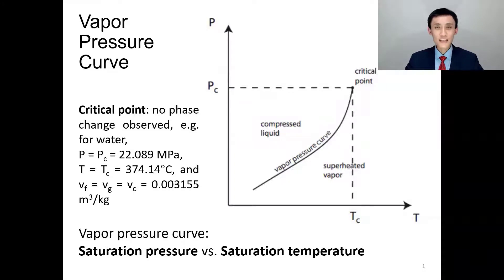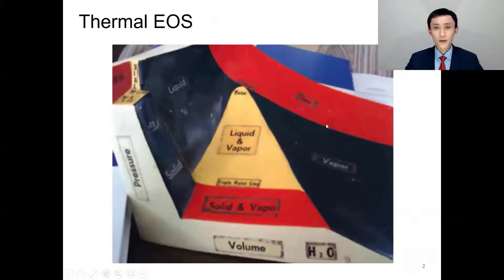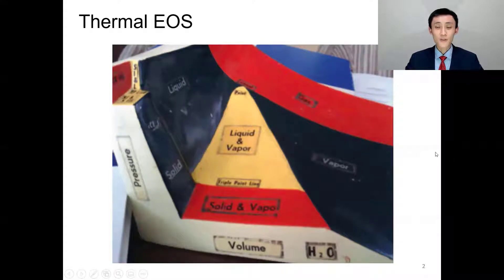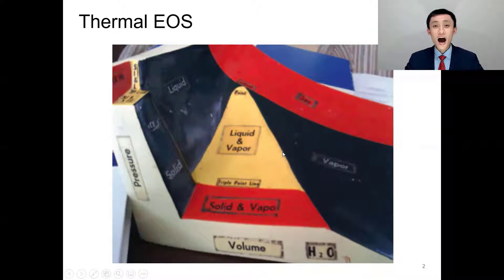You may be curious where it comes from. In the previous video, we discussed the thermal EOS: y-axis is pressure, x-axis is volume, and z-axis is temperature. If you look at the top-down view, you get a dome. Looking from the front, it's also a dome. And looking from the right — where x-axis is temperature and y-axis is pressure — it accumulates into a curve.